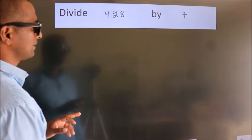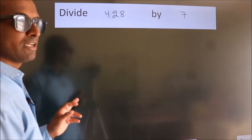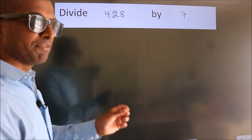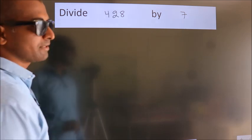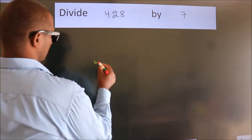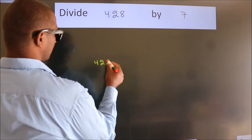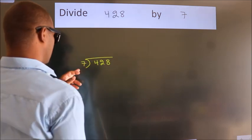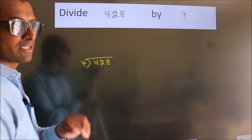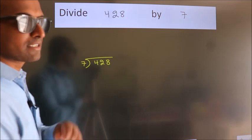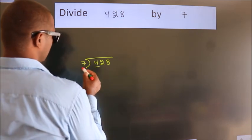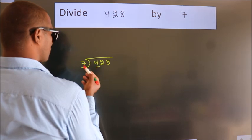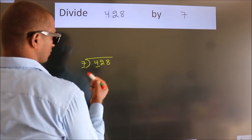Divide 428 by 7. To do this division, we should frame it in this way: 428 here, 7 here. This is your step 1. Next, here we have 4. 4 is smaller than 7, so we should take two numbers.